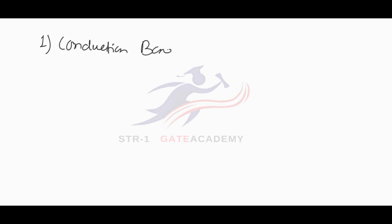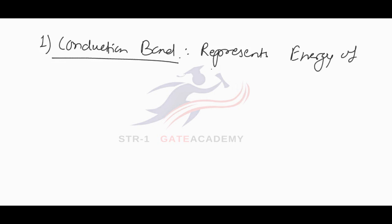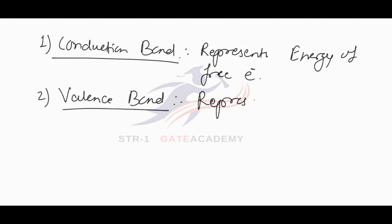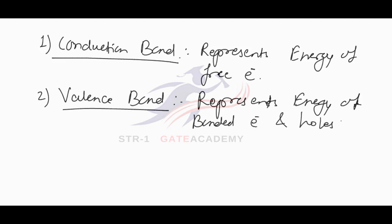So there are three energy bands. First, the conduction band, which represents the energy of free electrons — electrons which can move when supply is given to the material. Second, the valence band, which represents the energy of bonded electrons and holes in the material.